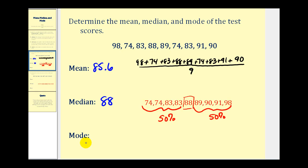And lastly, the mode is the number or numbers that occur the most often. It's often helpful to determine the mode when the data is in order from least to greatest. There are two 74s and two 83s, and there's only one of all the other values. So there are two modes in this case: 74 and 83.